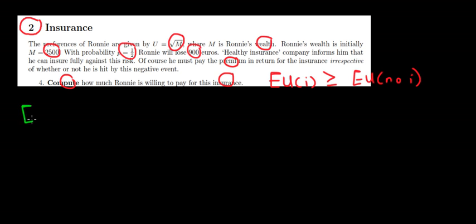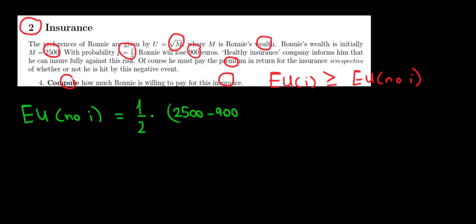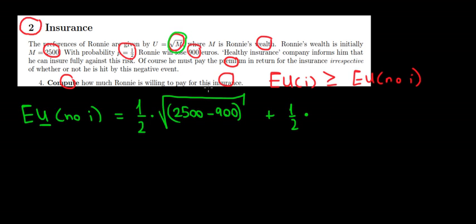What is the expected utility if we do not buy insurance? We know that with probability 1/2 we lose 900 euros, so with probability 1/2 our income is 2,500 minus 900. Since we're calculating expected utility, we apply the utility function — the square root of our income. With the remaining probability 1/2, we don't lose the money and keep all our income: square root of 2,500.